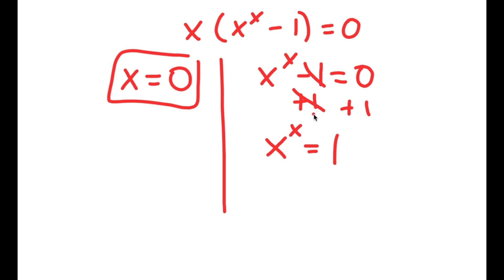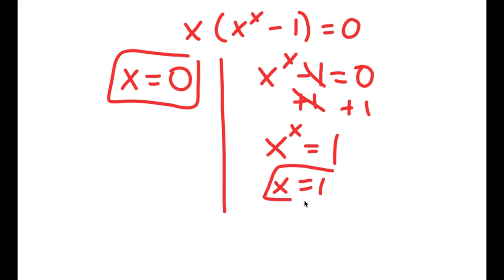Because x has to be the same number, what number to the power of itself equals 1? That's going to be 1, because 1 to the power of 1 equals 1. There's no other number that when you raise it to the power of itself gives 1, meaning x equals 1 is the only solution to this equation.